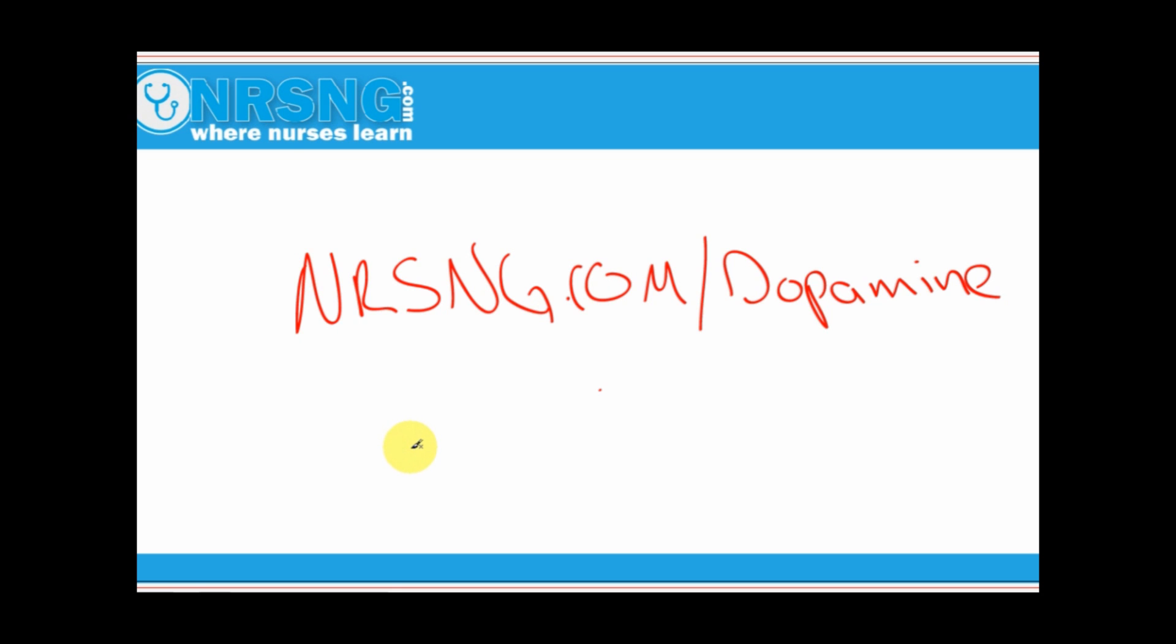The basic differences between dopamine and dobutamine, and it will also cover some of the other vasopressors and their effect on systemic vascular resistance as well as cardiac output. You can find that at NRSNG.com/dopamine.